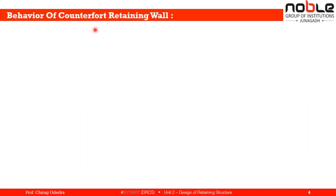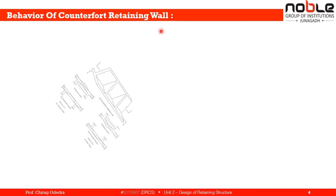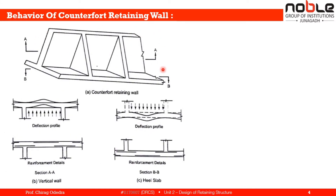Our next topic is the behavior of a counterfort retaining wall. In the figure there is a typical counterfort retaining wall. To understand this behavior we take two sections: section AA and section BB. The vertical stem, toe slab, and heel slab are visible, along with the counterforts which are spaced at H/3 distance apart.